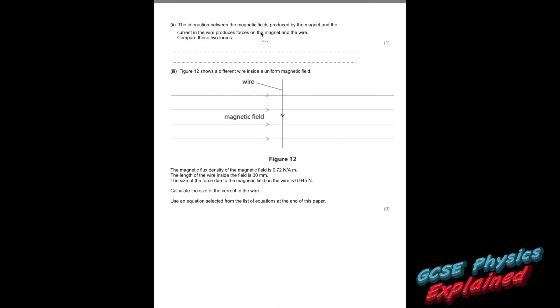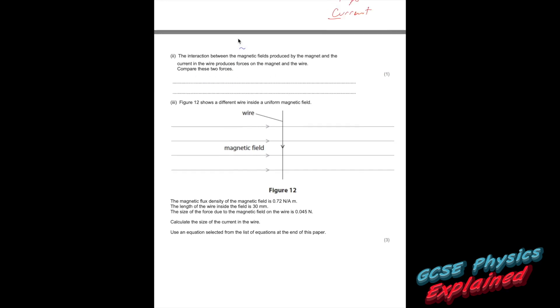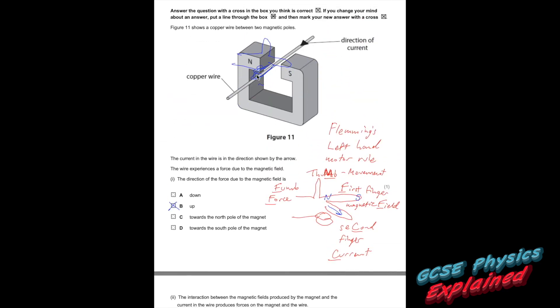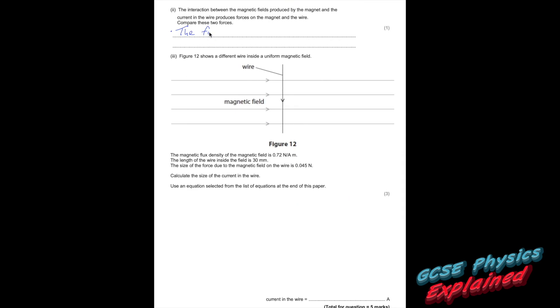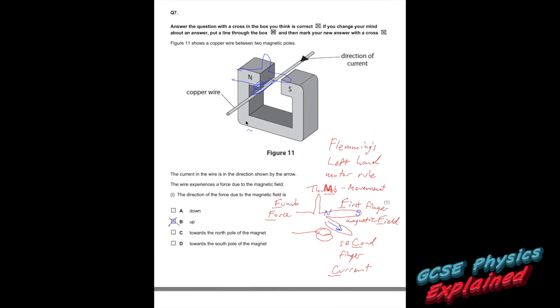Part 2. The interaction between the magnetic fields produced by the magnet and the current in the wire produces forces on the magnet and the wire. Compare these two forces. Right, what they're basically seeing is because there's a current going through that wire, there'll be a magnetic field around the wire. That magnetic field around the wire is going to interact with the permanent magnetic field around this permanent magnet. The force on the wire by the magnet will be the same as the force by the magnet on the wire. They'll be equal in size but opposite in direction. Now because that magnet will be resting on a table and that magnet's a lot bigger than the wire, you'll only see the wire move. The wire will be moved upwards and the large magnet will be moved downwards. But you won't see the large magnet moving downwards. It's on the table.